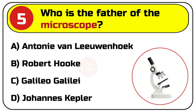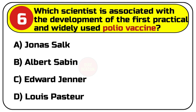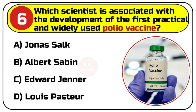Correct answer is A. Antony van Leeuwenhoek. Question number 6. Which scientist is associated with the development of the first practical and widely used polio vaccine? Options are: A. Jonas Salk, B. Albert Sabin, C. Edward Jenner, D. Louis Pasteur.